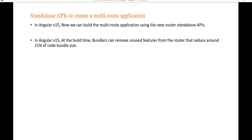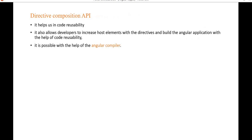Next is standalone APIs to create a multi-route application. In Angular 15, this feature helps us build multi-route applications using the new router standalone API. At build time, bundles can remove unused features from the router, reducing around 11 percent of the core bundle size.